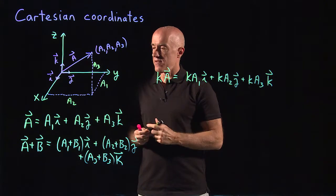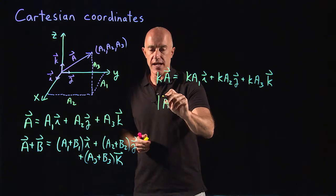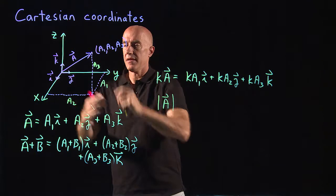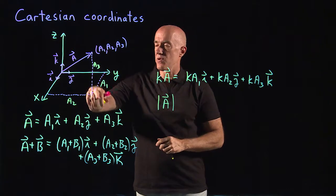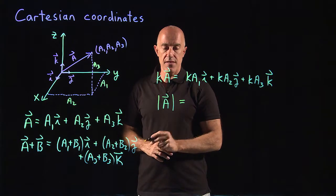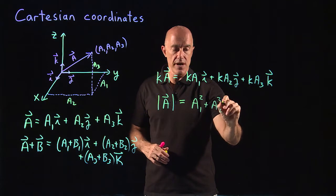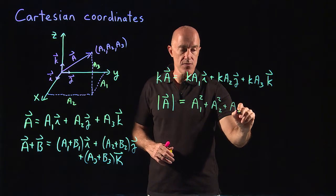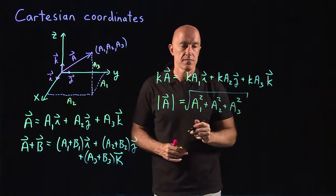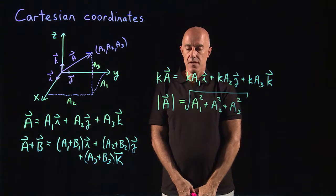One other thing we should know: what is the length of a vector? The length of the vector is represented by this absolute value sign. This is the length of a. If you use Pythagorean theorem in three-dimensional space, this would be the square root of a1 squared plus a2 squared plus a3 squared. So that would be the length of a vector.